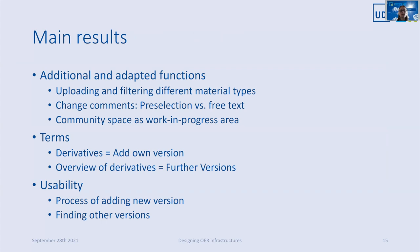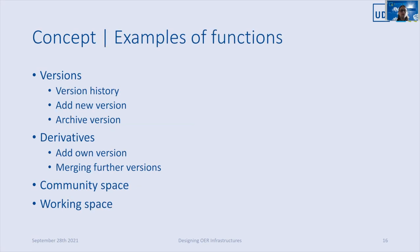The evaluation process resulted in some additional or adapted functions, for example regarding filtering different material types. Change comments were divided into mandatory preselection and optional free text, and the community space was developed and expanded as a work-in-progress area. We also asked for comprehensible terms and visibility of processes. Since 'derivative' is not a common term, we found suitable terms for replacing it: recreating a derivative we describe as 'add-on version,' and the overview as 'further versions.' The concept involves views and functions regarding adding, archiving and merging versions, as well as a community and a working space.